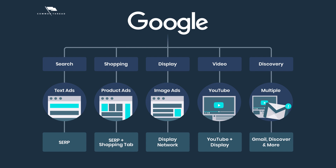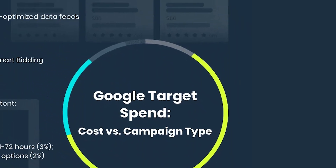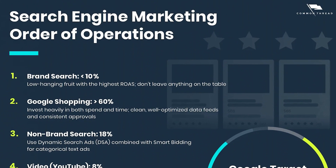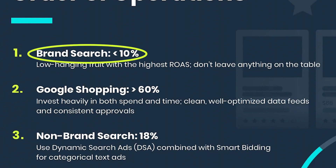There are a multitude of other placements beyond search available to us in Google Ads, from YouTube to display to shopping ads. A great place to start when thinking about allocating your spend for growth is what we call the search engine marketing order of operations. Since a picture is worth a thousand words, here's a visual that shows our recommended allocation of spend for each channel. We have branded search at less than 10% of spend to pick up that low-hanging fruit but not overspend.